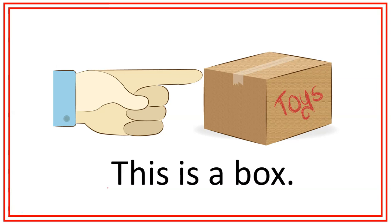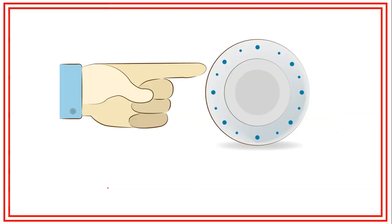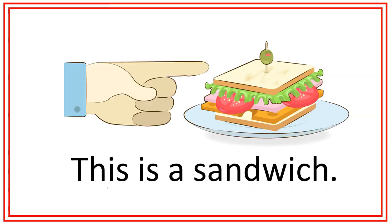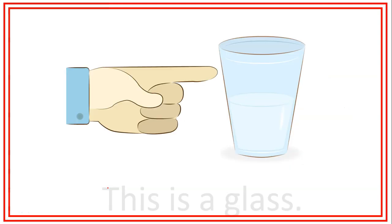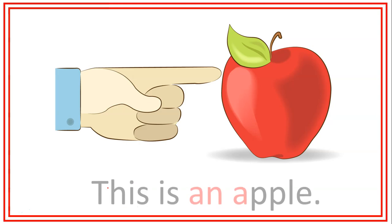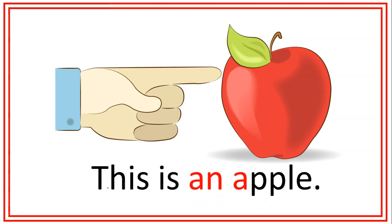Vamos a ver algunos ejemplos. This is a box — esta es una caja. This is a plate — este es un plato. This is a sandwich — este es un sándwich. This is a glass — este es un vaso. This is an apple — esta es una manzana. Recuerden: cuando la palabra comienza con una vocal, tenemos que usar la palabra an, como vimos en la lección número 1.